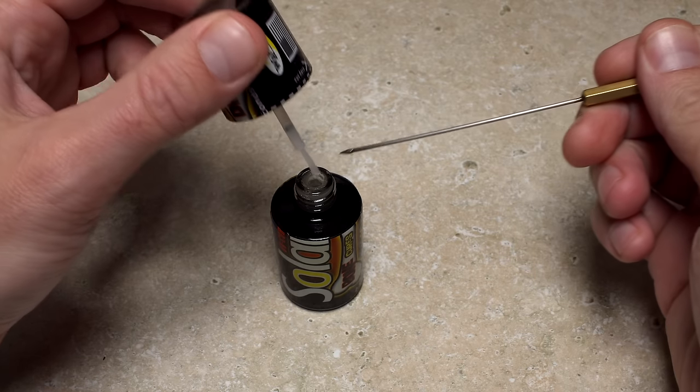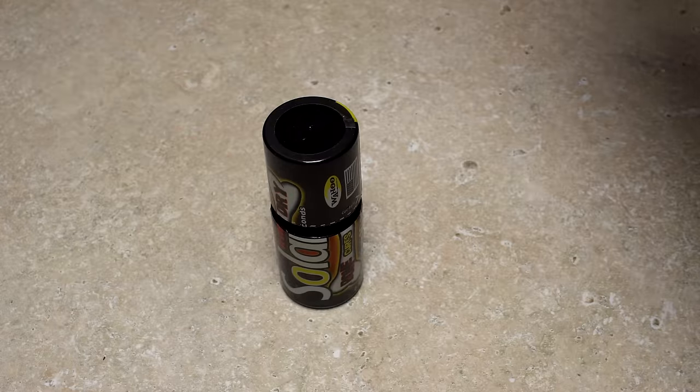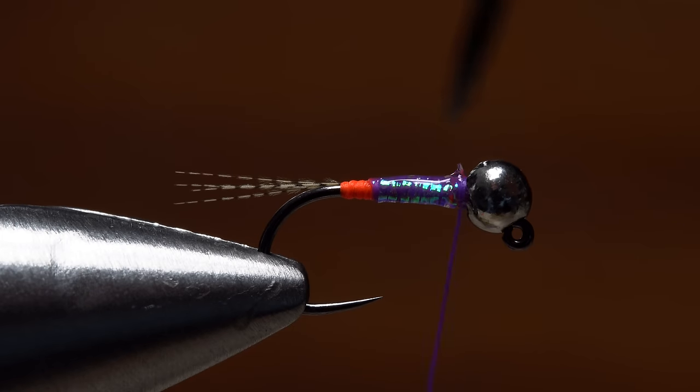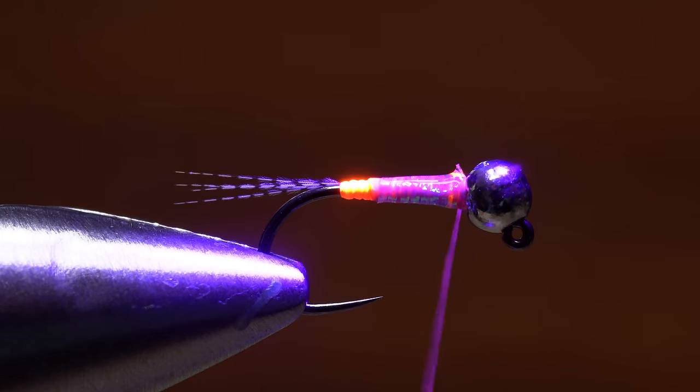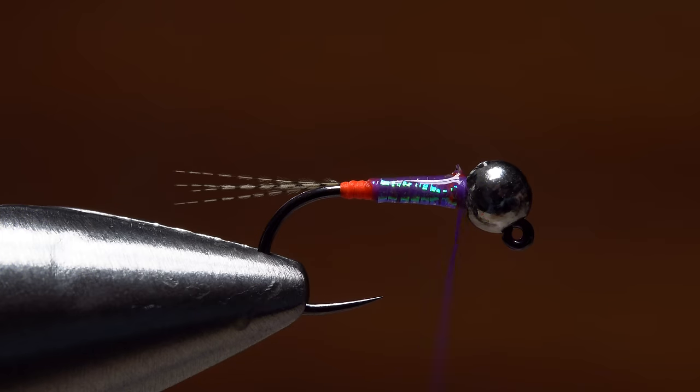Just the smallest amount of UV cure resin applied to the tip of your bodkin is enough to coat the wraps of flashaboo. Follow this with a good shot of UV light and the resin should set hard and clear.